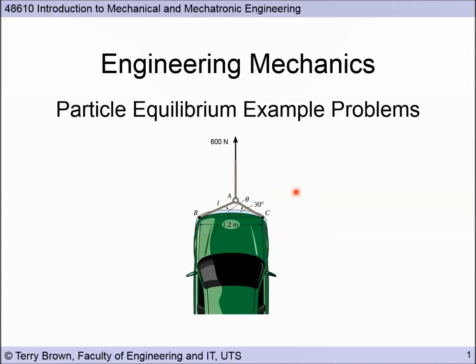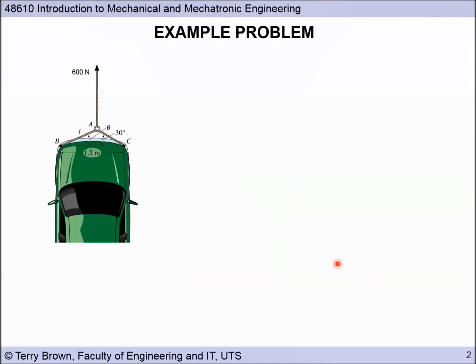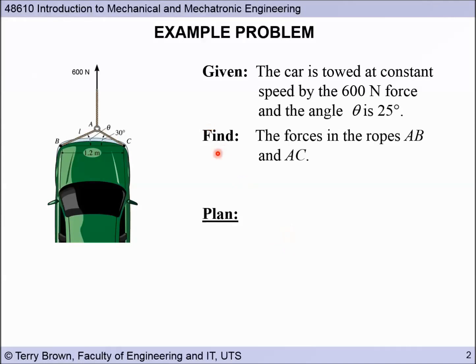So let's get into the examples that we have here. The first problem that we're going to look at is that we have a car being towed at a constant speed by this 600 Newton force, and we're given an angle here theta is 25 degrees. If you look at our diagram here, this angle is given as 30, and then over on the left this angle between the rope AB and this horizontal line is 25 degrees. So we're asked to determine the forces in each of the ropes AB and AC.